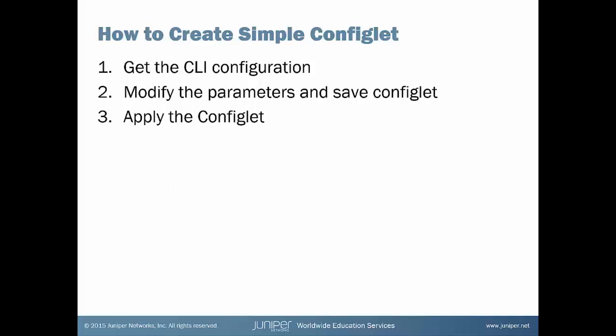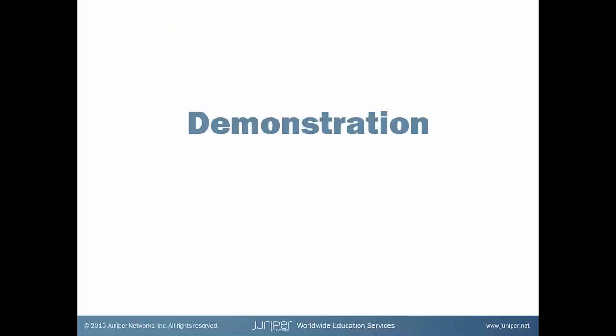Alright, let's create one. To create it, the first thing you do is grab the CLI configuration you want to use as a template, or a snippet or chunk of it — you don't need the whole thing. Then you paste that into the editor, adjust the parameters, create your variables, and save it. Then you apply your configlet. We're going to go through and show you how to do that.